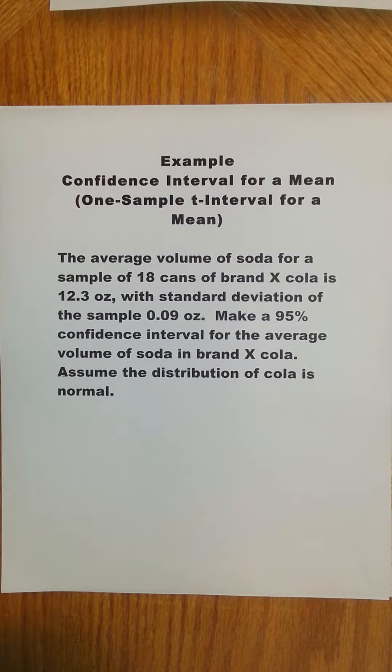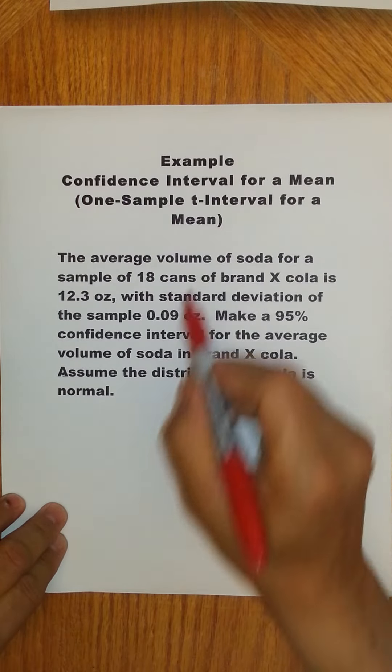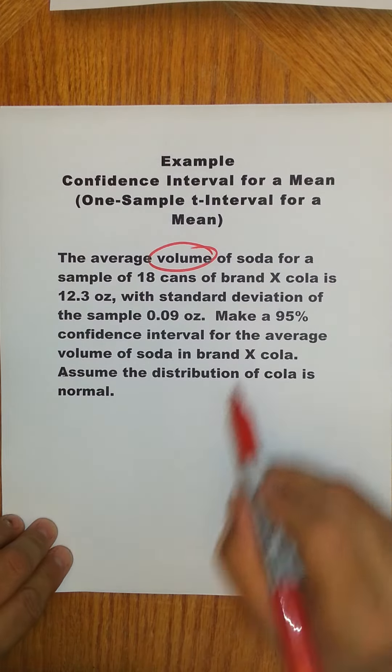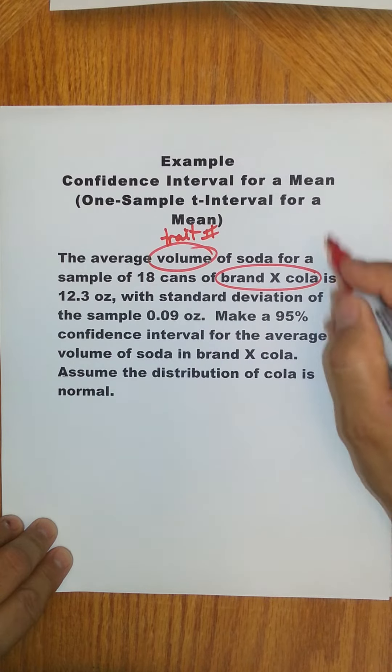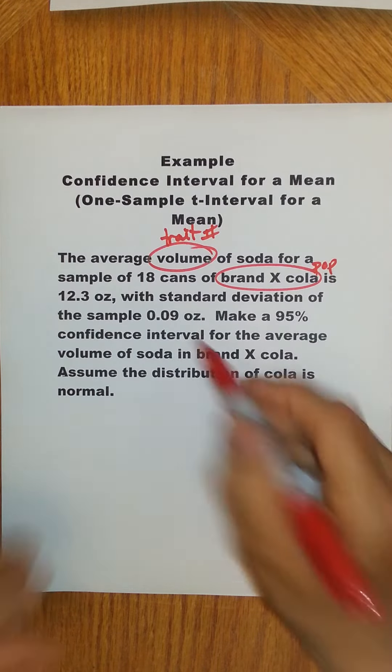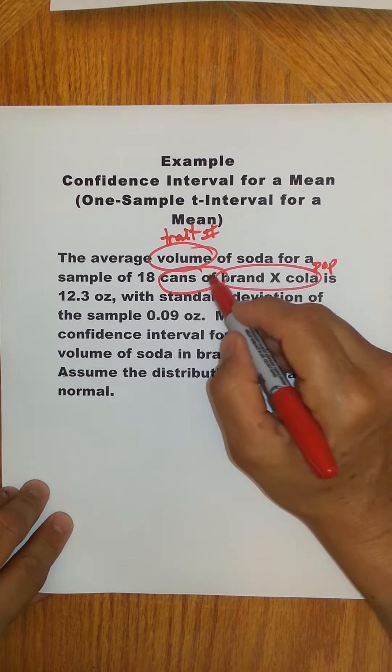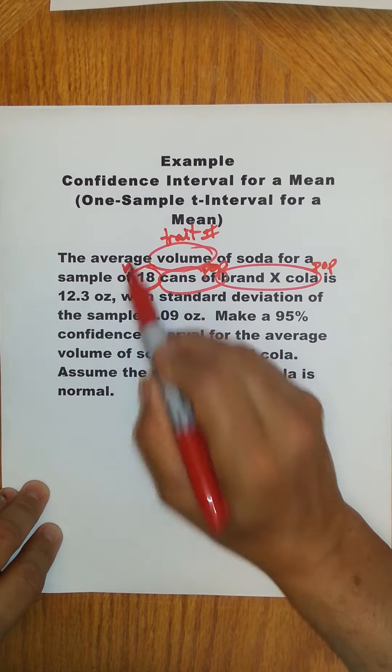I'm going to create what I call an info box to organize the information. The trait is the volume, the amount of fluid in the soda for all Brand X Cola. So here's the trait and it's numerical. Brand X Cola, that's your population, well actually all the cans technically of the Brand X Cola. We have 18 as the sample size.